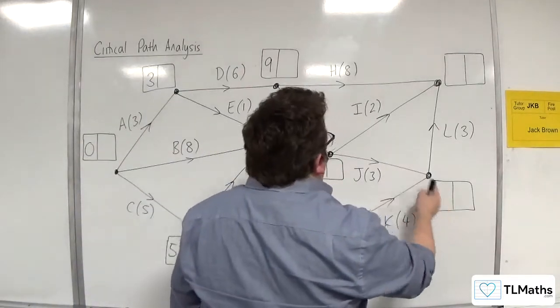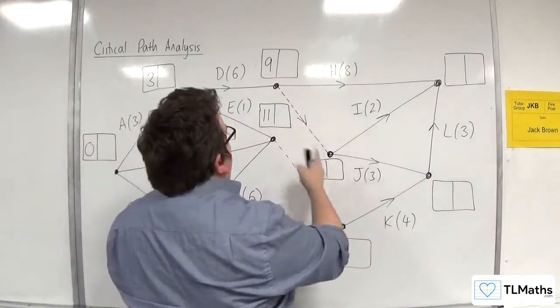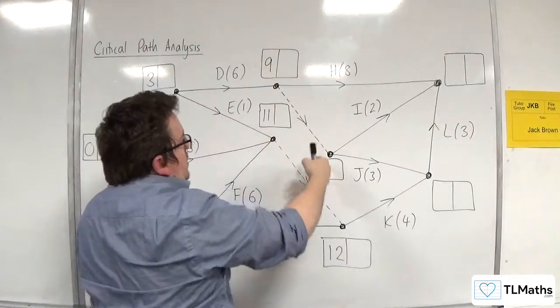Now, we can't go to this box yet because we don't have this one. So let's do this one next. 9 plus 0, so 9.